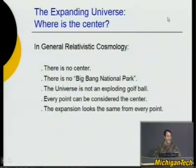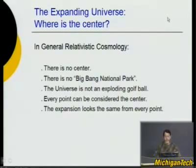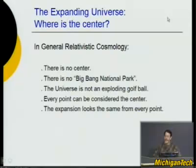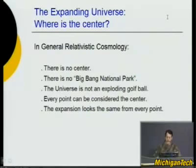There's no center. General relativity, which explains cosmology better than any theory, has no center. There's no equation for 'this is the center.' There is no Big Bang National Park — you cannot go on a field trip to stand where the universe started expanding from. The universe is not an exploding golf ball, according to general relativity. It doesn't even work with Newtonian gravity. Every point can be considered the center of the universe, and the expansion will look the same from every point.